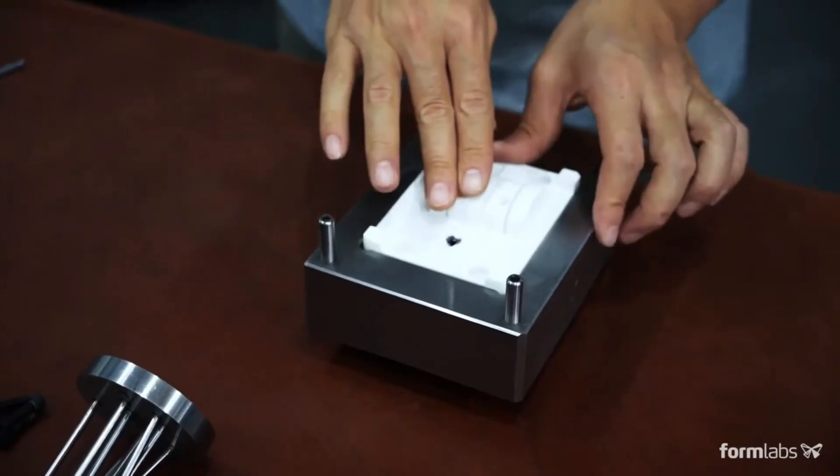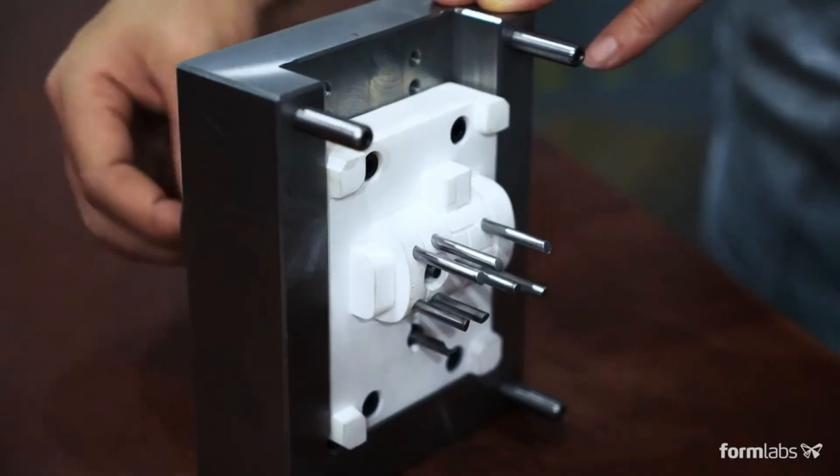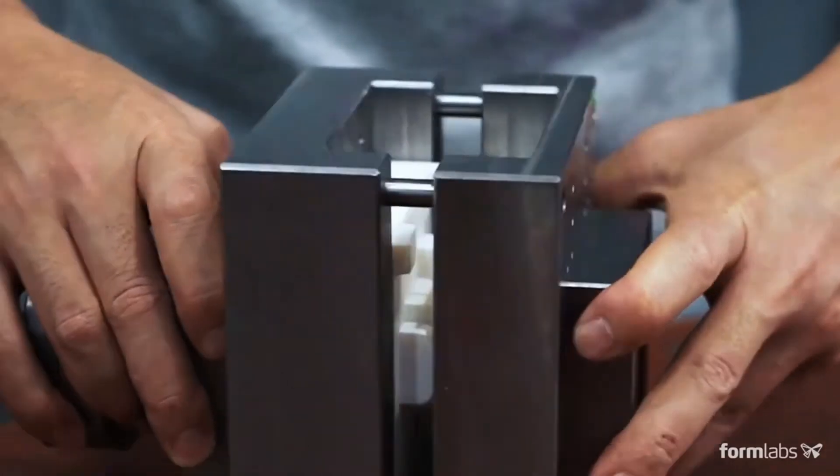Assemble the 3D printed mold inside the metal frame. Ejector pins can be added to automate demolding. The mold is now ready to be used.